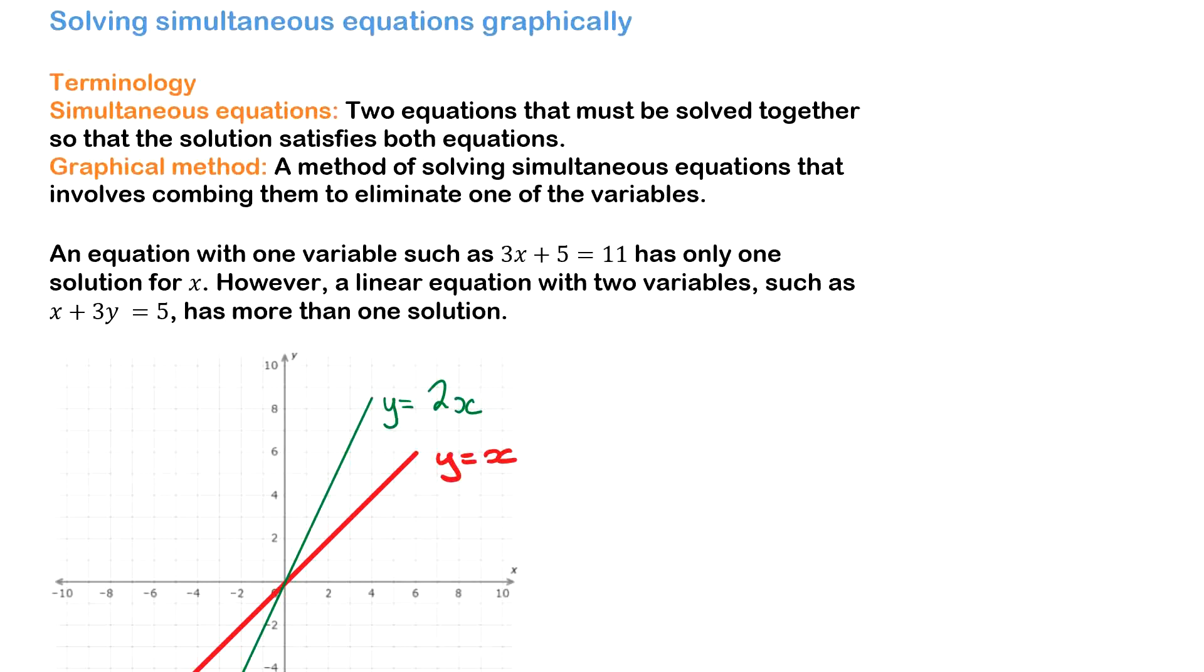A simultaneous equation is two equations that must be solved together so that a solution satisfies both equations. The graphical method is a method of solving simultaneous equations that involves graphing them together to eliminate one of the variables.